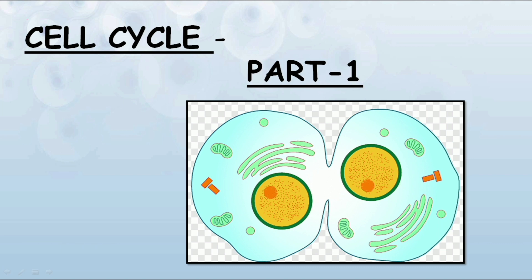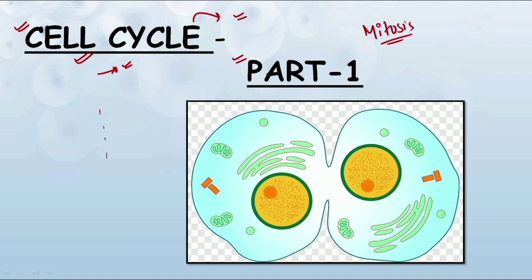Hello everyone, welcome to Botany Insider. In this lecture we will be dealing with the topic of cell cycle. It is one of the most important topics from the cell biology unit and also one of the frequently repeated topics in the CSIR UGC NET examination. This is the first part of cell cycle, in which we will be dealing with some of the basics and also with the various steps of the cell cycle. In subsequent lectures we will be dealing with mitosis, meiosis, and other important subtopics of the cell cycle.